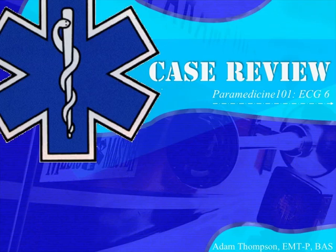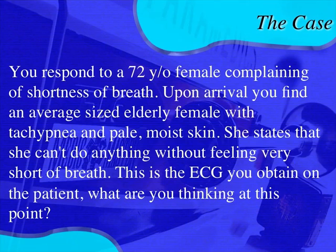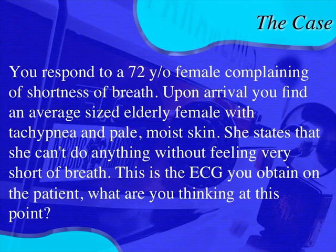Welcome to ECG case number six from the paramedicine101.com website. Here's the case scenario: you respond to a 72-year-old female with shortness of breath. She says whenever she gets up she gets very short of breath and can't do anything without it. She's breathing fast with pale, moist, cool skin. Knowing this, even though she has no chest pain, elderly females often have atypical MI presentations — it could be an angina equivalent — so we do an EKG.